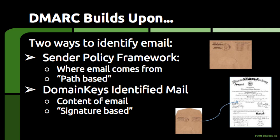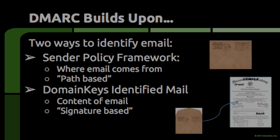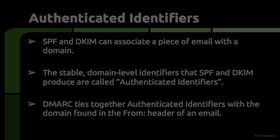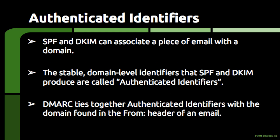DMARC builds upon two existing technologies that are used to associate a piece of email with a domain. SPF, which stands for Sender Policy Framework, and DKIM, which stands for Domain Keys Identified Mail, work in different but complementary ways to create a link between a piece of email and a domain. SPF and DKIM are standalone technologies that have been around for many years and can be used independently from DMARC.